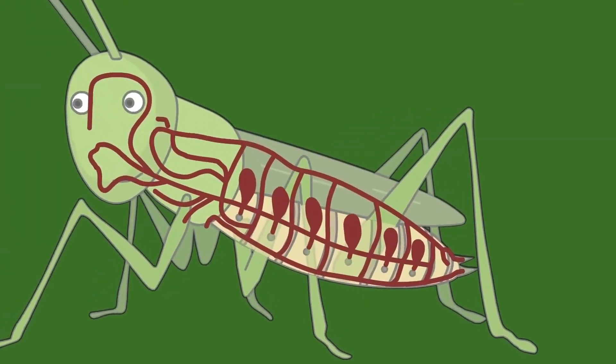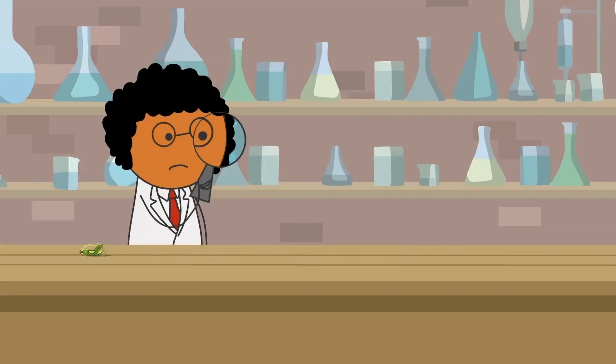These tiny beings breathe through tiny tubes called trachea, so with more oxygen entering these tubes, their bodies will eventually expand. However, you won't have to worry about staying safe from these monsters as you will be able to outrun them all.